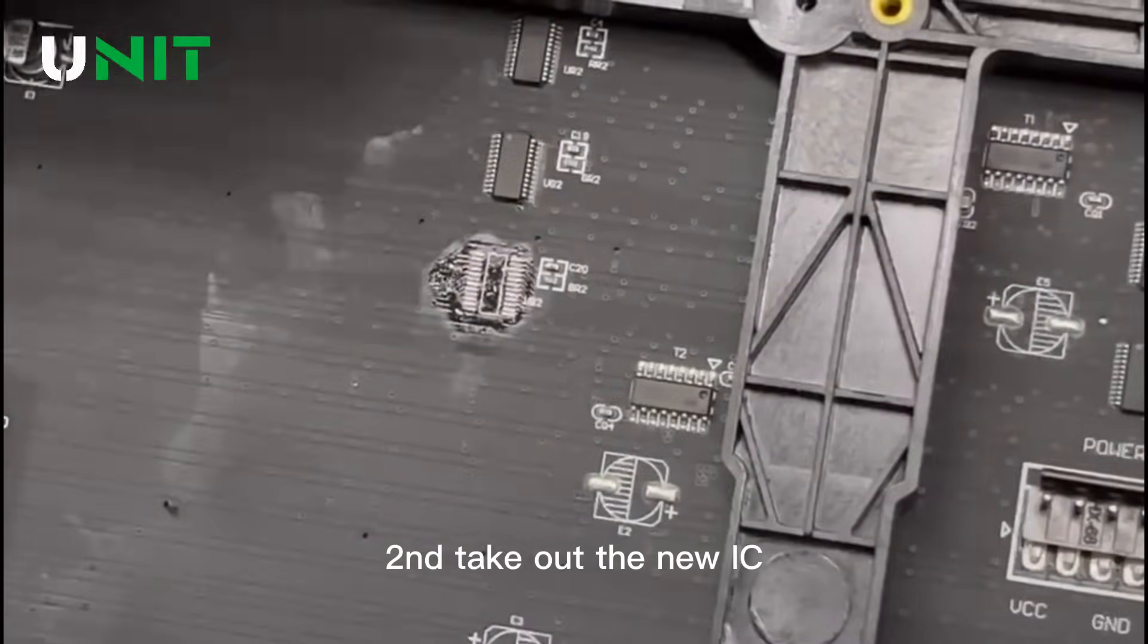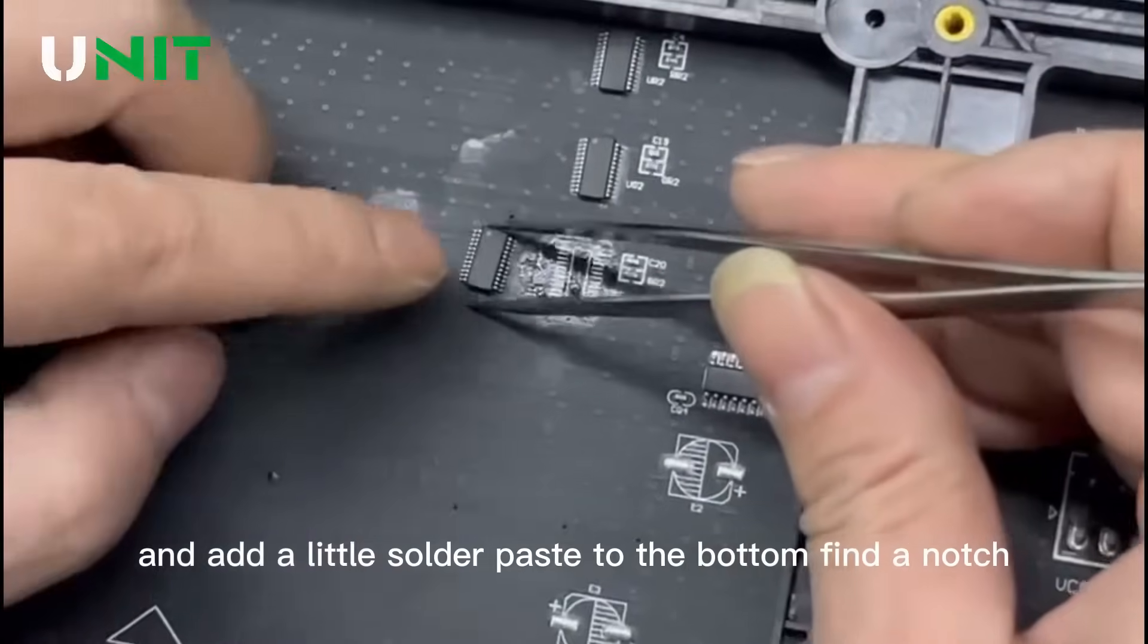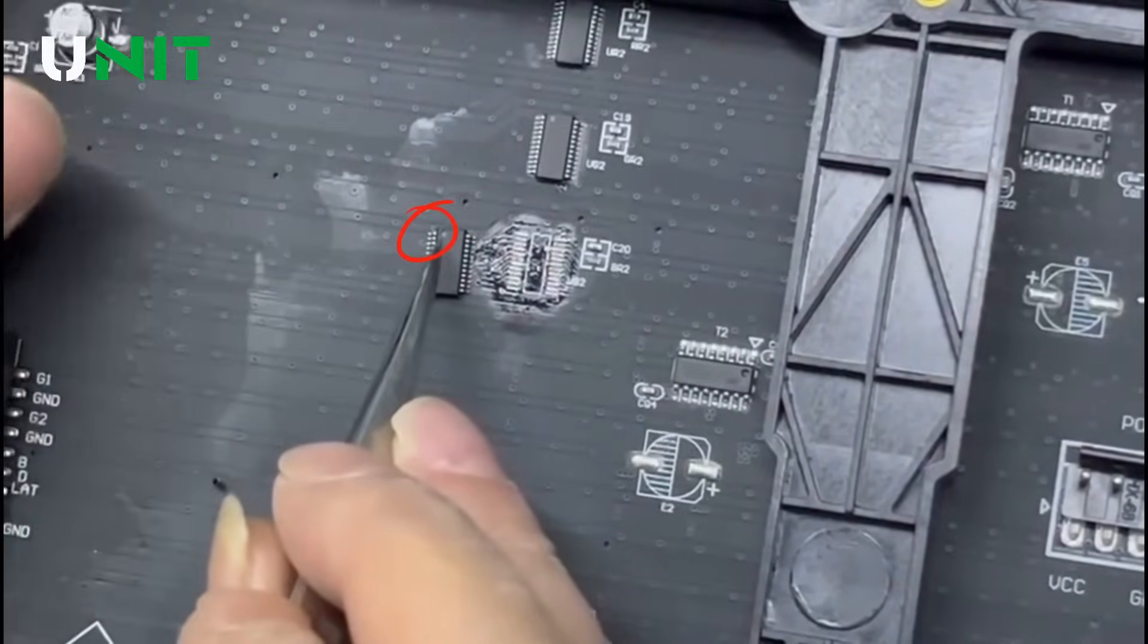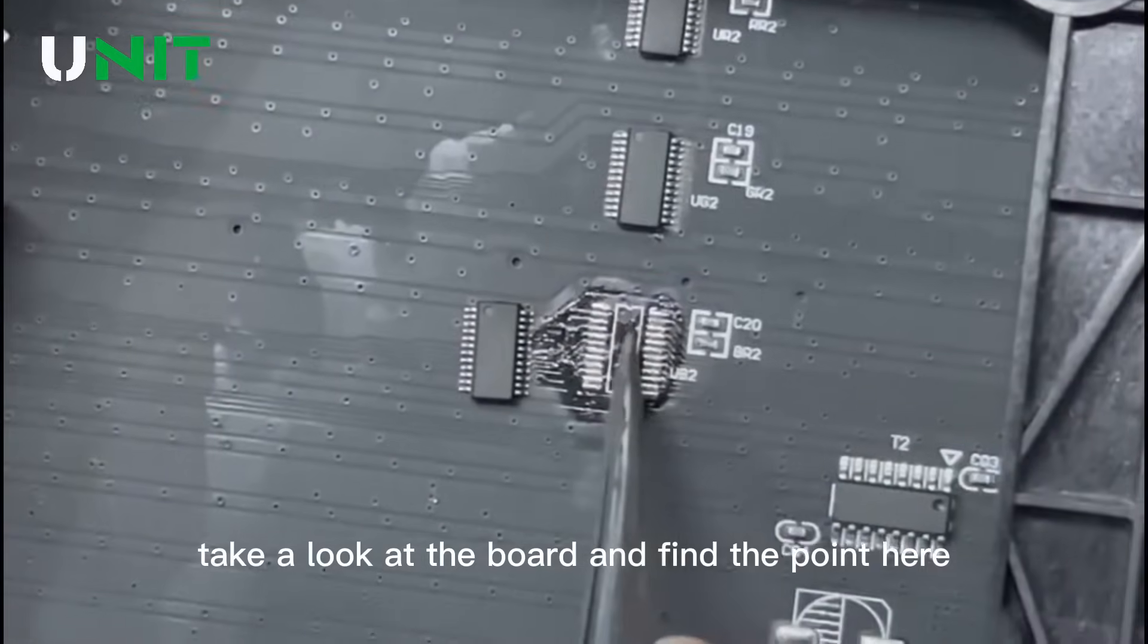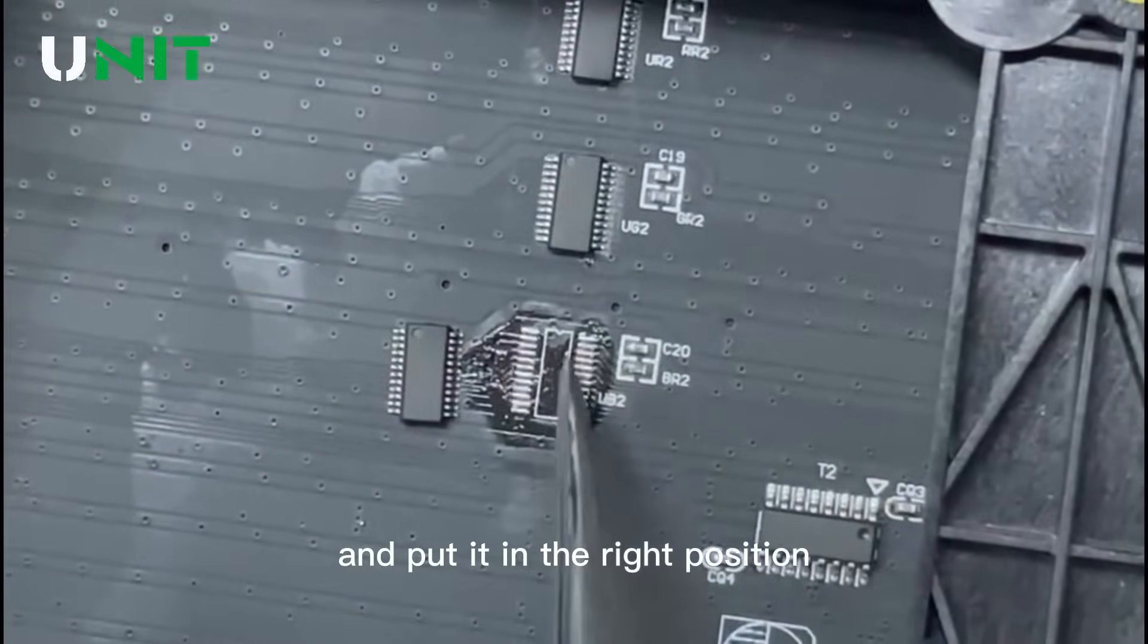Second, take out the new IC and add a little solder paste to the bottom. Find the notch on the IC, then look at the board and find the point here and put it in the right position.